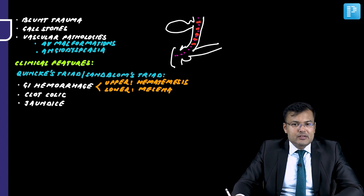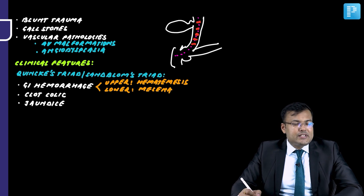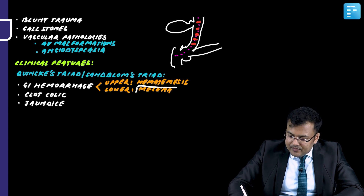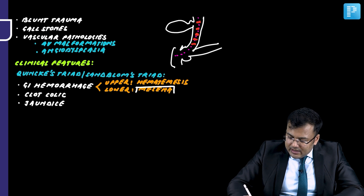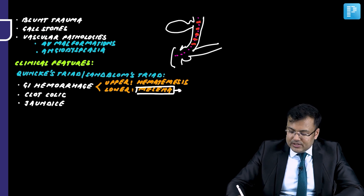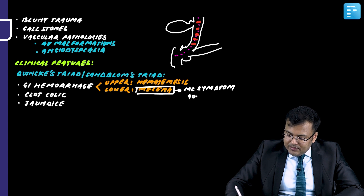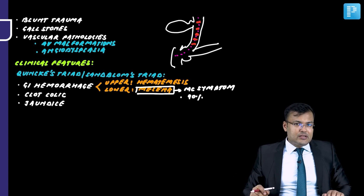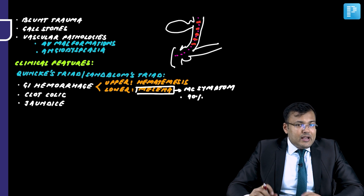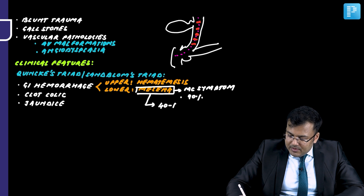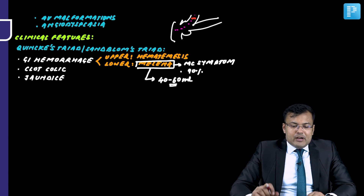Out of hematemesis, malena, clot colic, and jaundice, the most common symptom is malena, seen in 90% of patients. In one exam, a question was asked: what is the minimum bleeding required for malena? The answer is 40 to 60 ml.